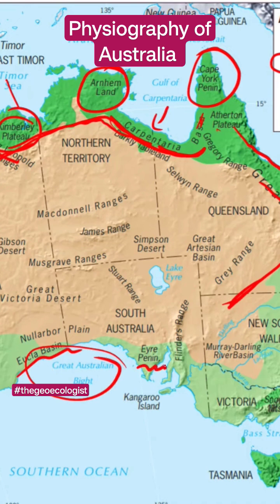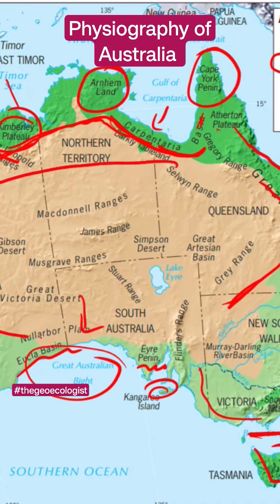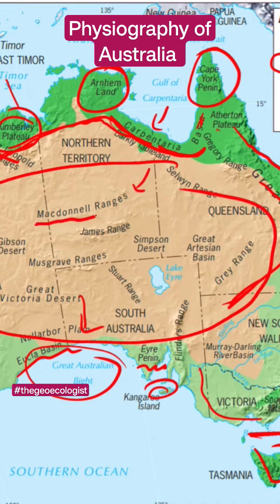You can observe Eyre Peninsula, which is part of Southern Australia. Victoria, Kangaroo Island, Tasmania, and Bass Strait — all these places are in the south. Most of central Australia features plateaus and some ranges like the MacDonald Ranges, Gibson Desert, and Simpson Desert.